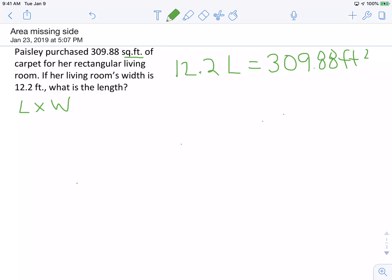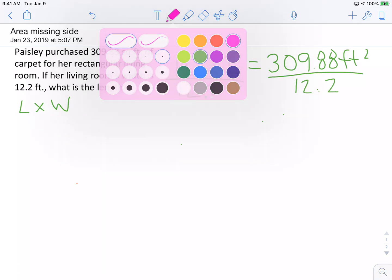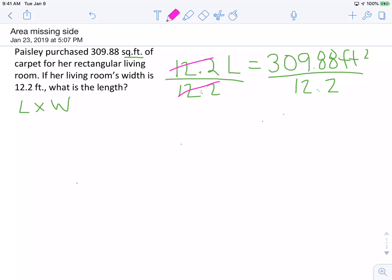When you're talking about algebra, you want to get the variable all by itself. And in order to get rid of the numbers next to it, you have to do the opposite of what you're doing. So to get rid of the 12 being multiplied by 12.2, I have to divide by 12.2. Then I can come back over and I can cross-cancel those two—cancel each other out—and that leaves the L by itself. Now I'm going to have to divide 309.88 feet by 12.2.